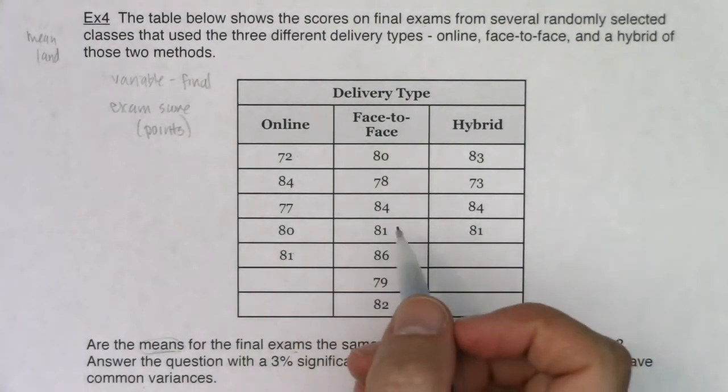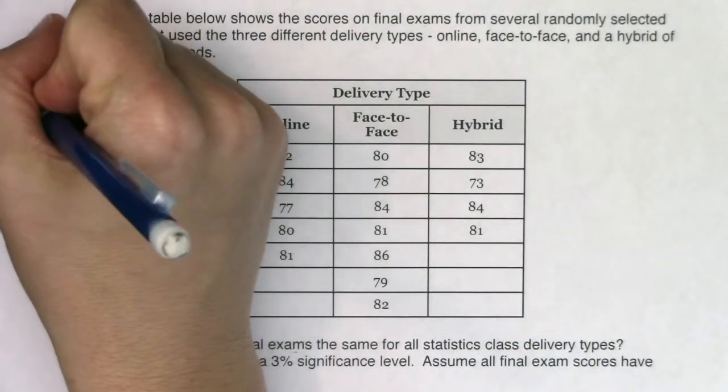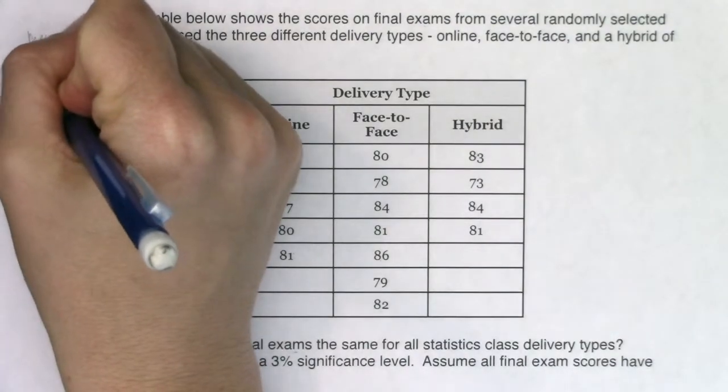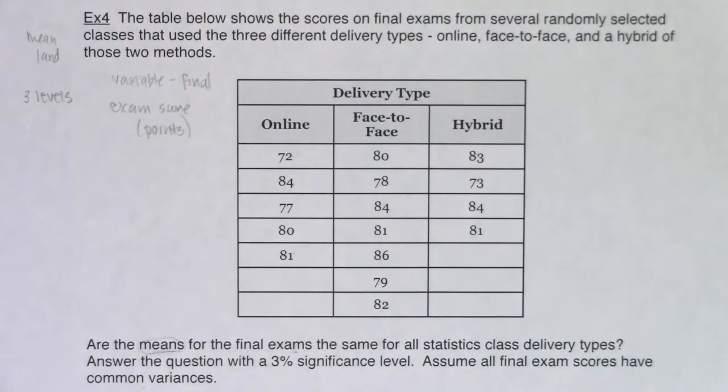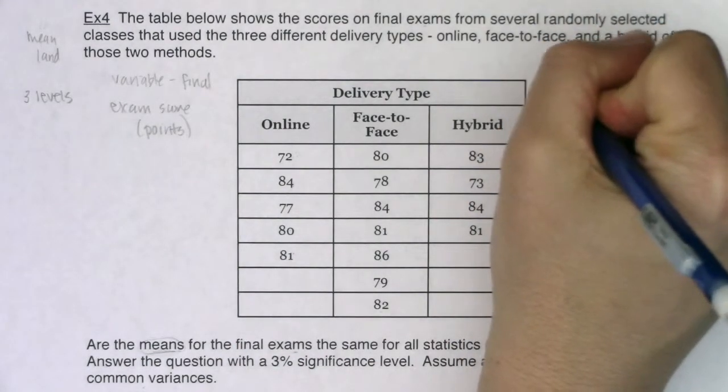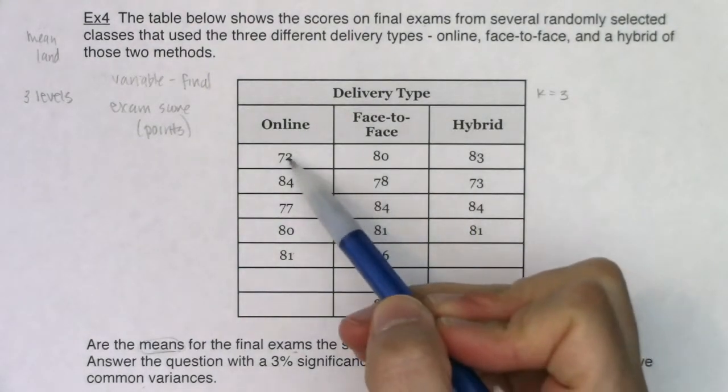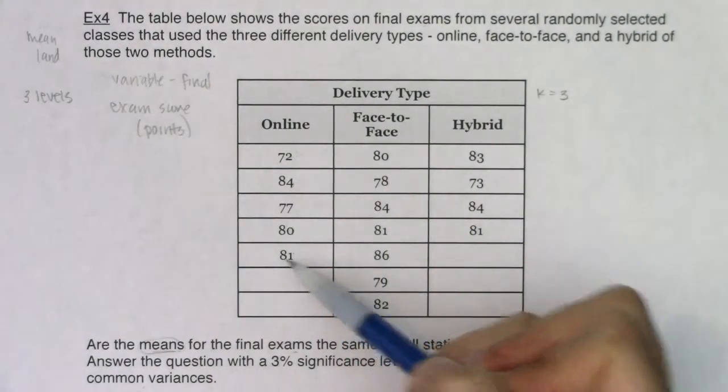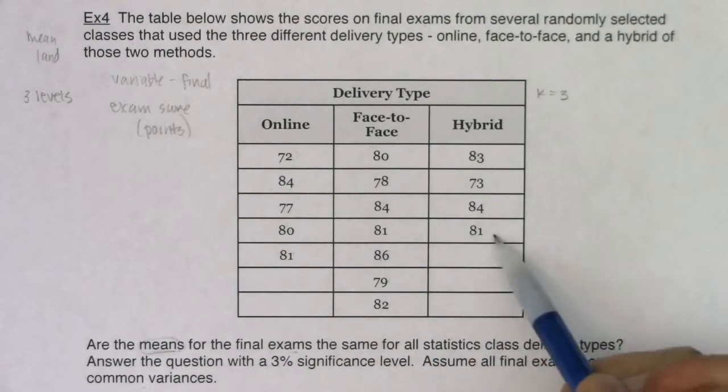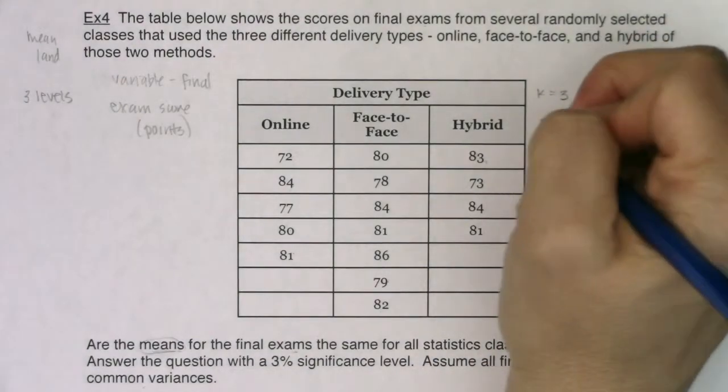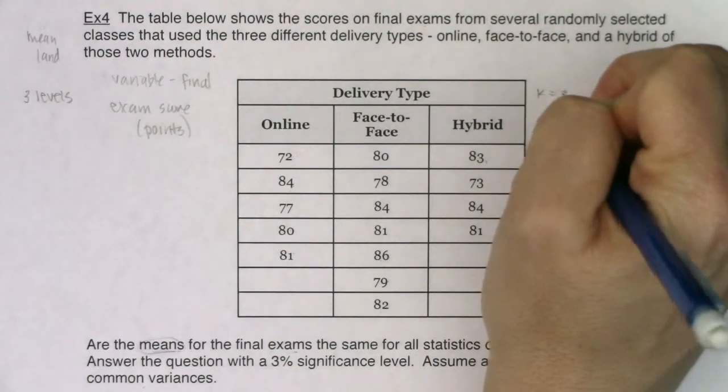So I'm in mean land. My variable in this problem is final exam score. I'm going to assume that's coming in points. I mean, this could be percentage points. This could have meant they scored 72 percent, 84 percent, but it's not a relative frequency in terms of successes over sample size. So this is still a numerical variable we're looking at. I have three groups.